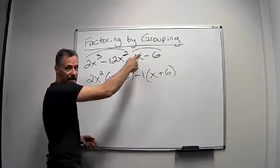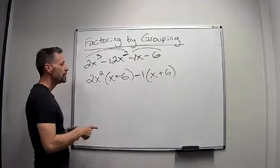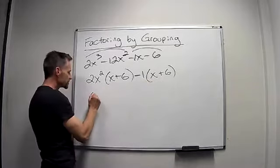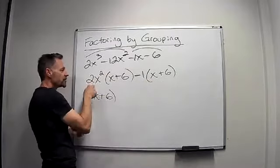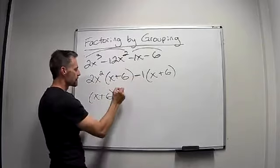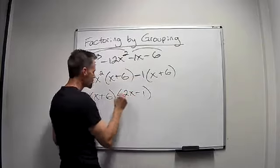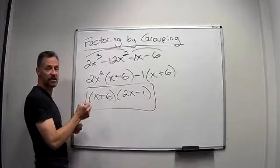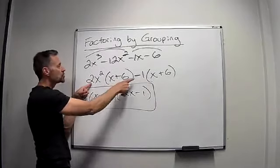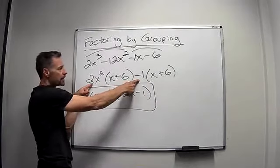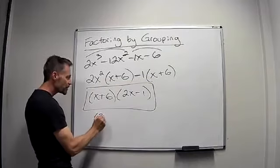Again, you can always check by distributing it and make sure you get what it was before. But now again factor out the x plus 6. And those are gone, at least with 2x squared minus 1. And again, some students like to look at it the other way. They look and then they go oh 2x squared minus 1. And then there's an x plus 6. So they write it this way. And it doesn't matter.